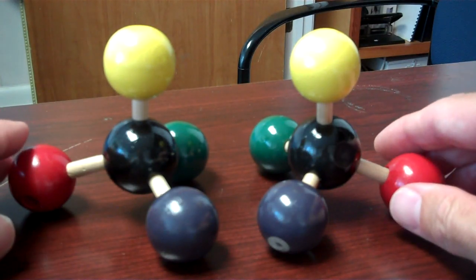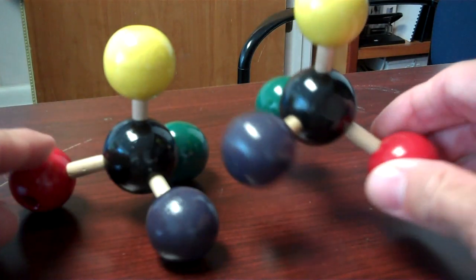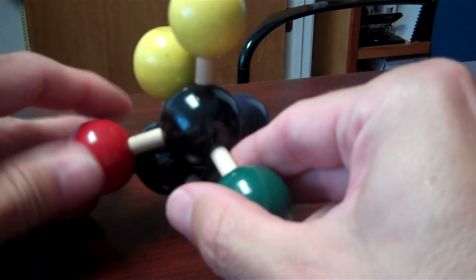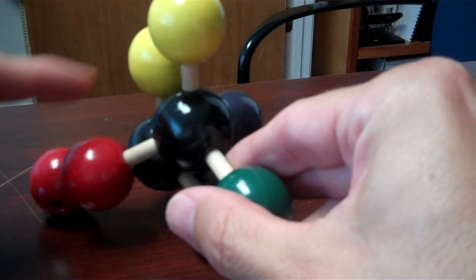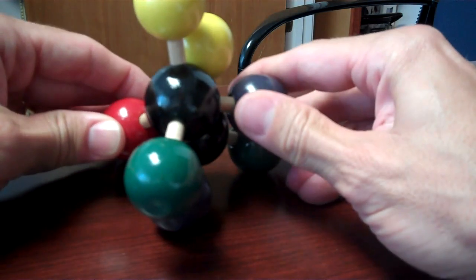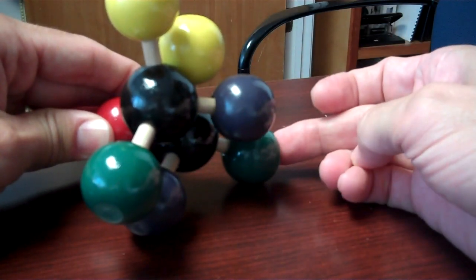Now another way to establish that these are not identical is if I pick up one of these and try to superimpose them atom for atom. I can get the red atoms to match up and the yellow ones, but notice that the green and the purple atoms do not match up.